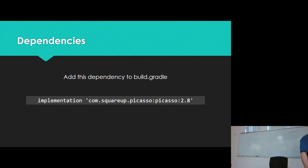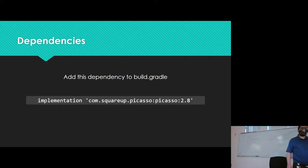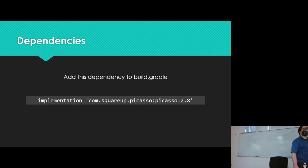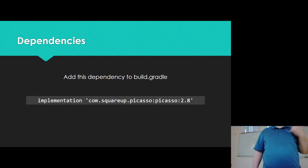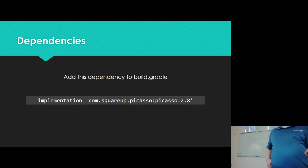As far as bringing Picasso in, you'll be adding it to your dependencies. The dependency line to add is: implementation com.squareup.picasso — the Picasso package — and the latest version as of right now is 2.8. That's the first thing you'll need to add to your Gradle to make this work.